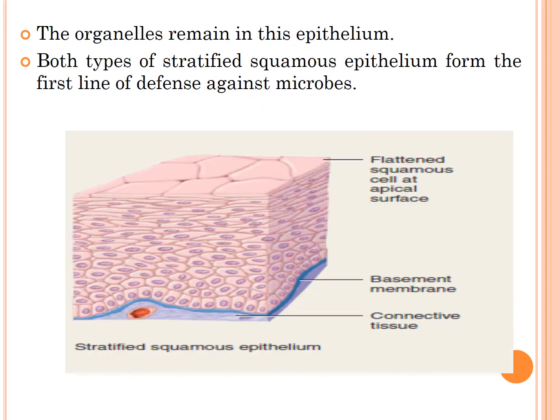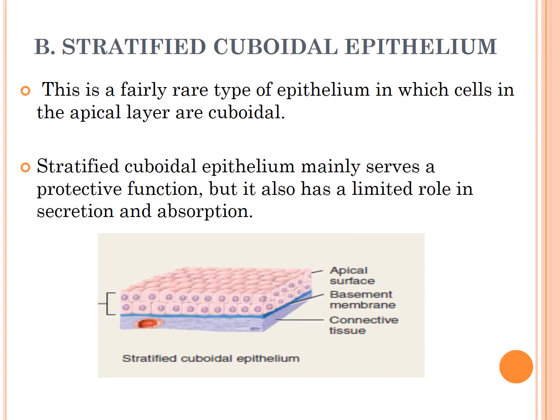Both types of stratified squamous epithelium form the first line of defense against microorganisms. The second type of stratified epithelium is stratified cuboidal epithelium, a fairly rare type in which cells in the apical layer are cuboidal in shape. It mainly serves a protective function but also has a limited role in secretion and absorption.